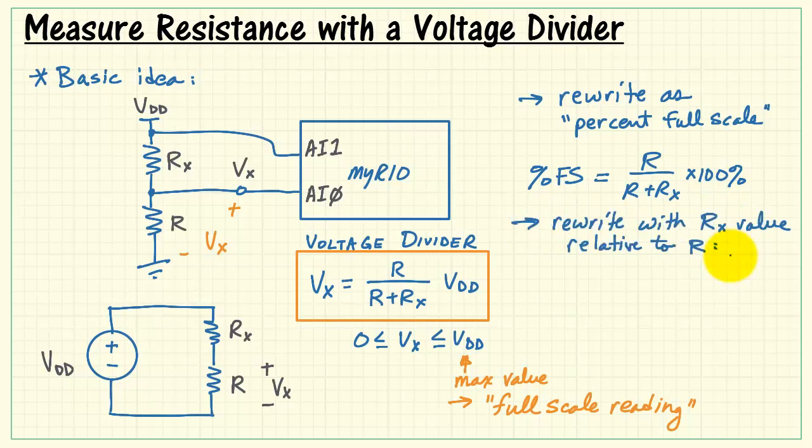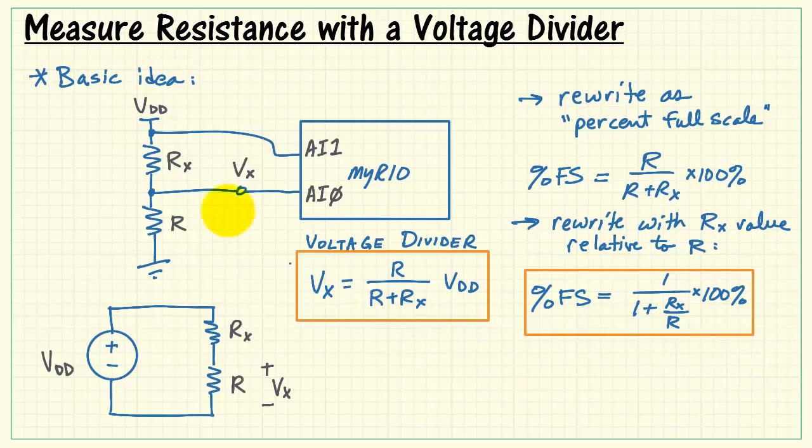We can multiply that by 100%, abbreviated as percent full-scale. Next I'd like to rewrite the unknown resistance relative to the fixed valued resistor R. Let me extract this piece and recast this as Rx divided by R times R. I haven't actually changed anything, but now I've got it relative to R. Notice that three R's drop out of the equation, and we're left with this simplified form. This is really still the same thing as the voltage divider expression, just rewritten in a more convenient form.